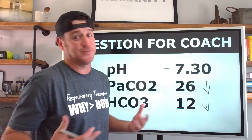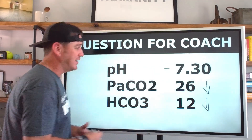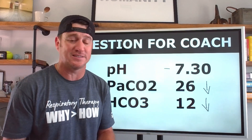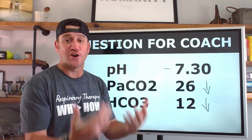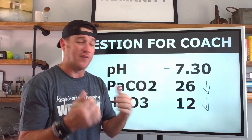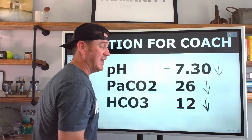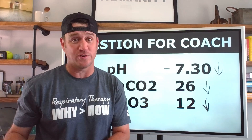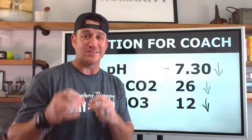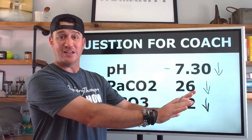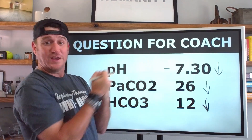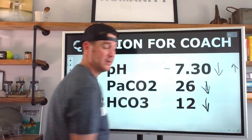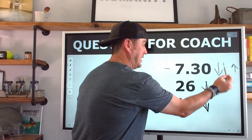To interpret this blood gas, it takes a basic understanding of arterial blood gases. What we have to realize is that bicarb, or bicarbonate, pulls pH with it. So if bicarb goes down, then pH goes down. If bicarb goes up, then pH goes up. But that's not how CO2 works. When we're talking about CO2, it pushes pH in the other direction. Bicarb pulls it with it; CO2 pushes it away from it. So when CO2 goes down, pH goes up. When CO2 goes up, pH goes down.